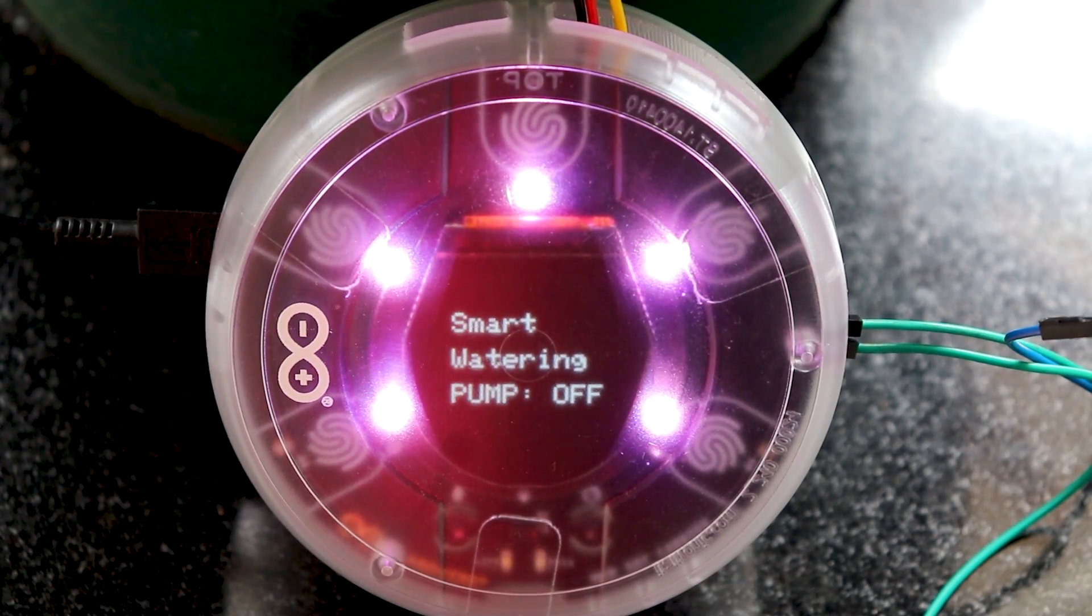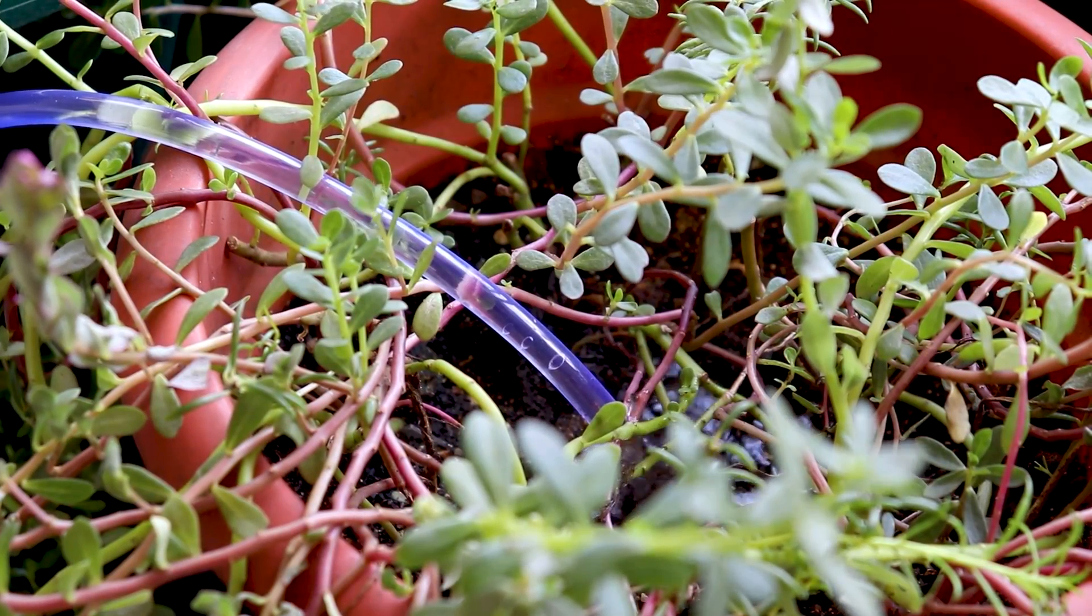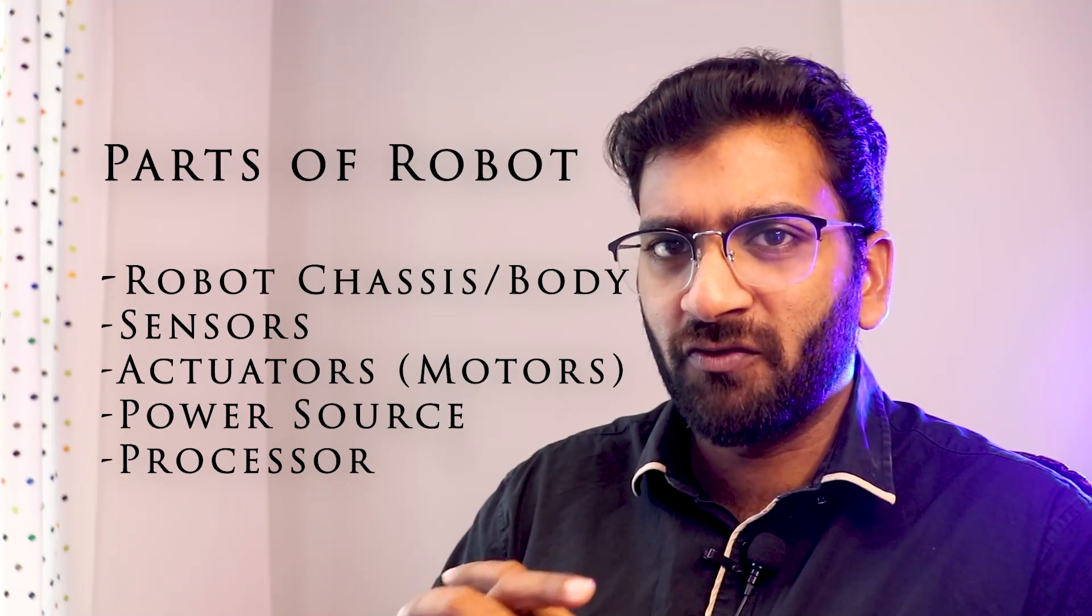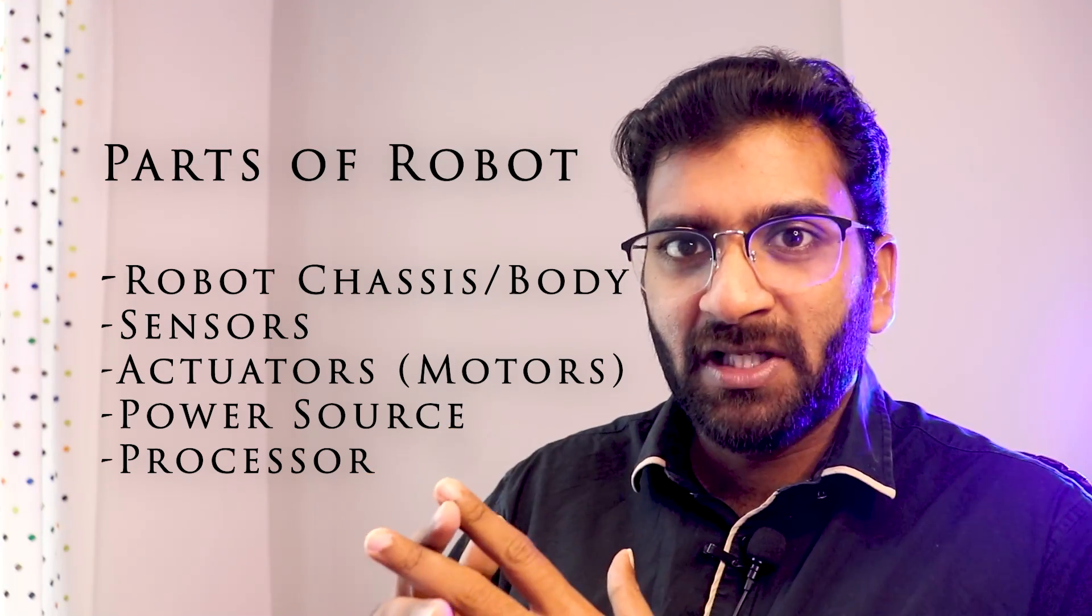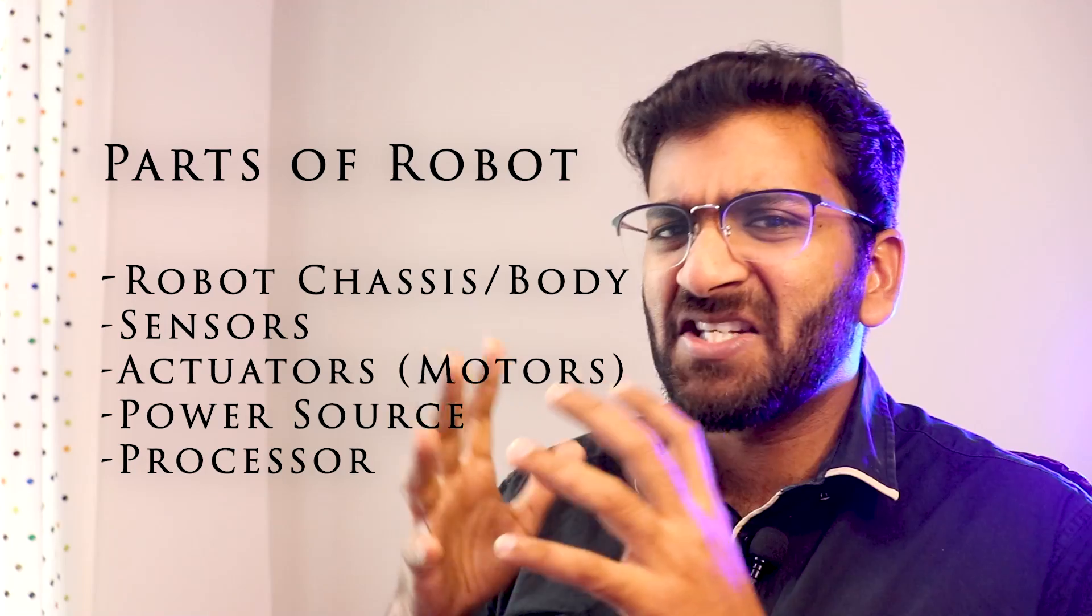Or consider an automatic plant watering system which will turn on the water pump when the moisture sensor detects the soil is dry. So the next question is, how do we turn on and off the motors or the pump depending on the sensor readings? For that we will need a processing unit that will process the information and make the decision. That's where Arduino comes to play.